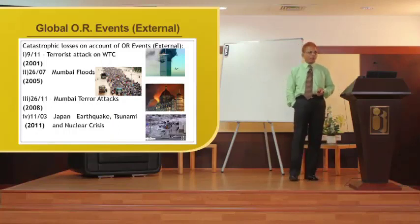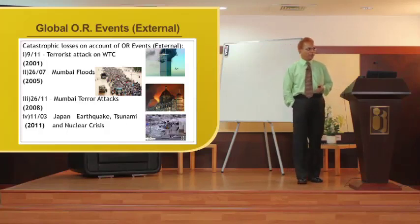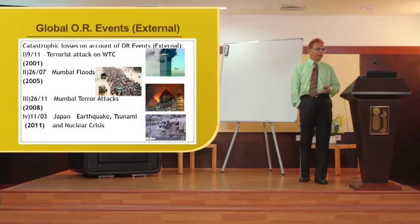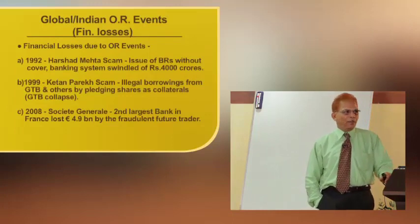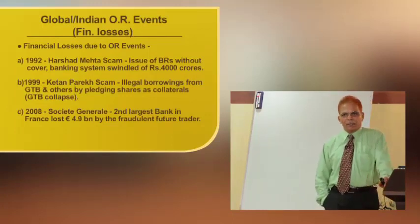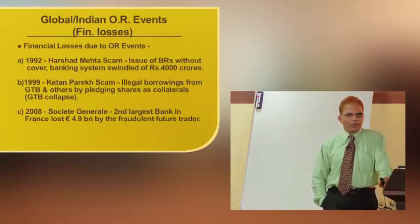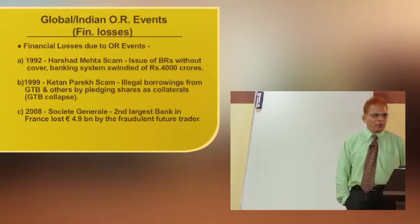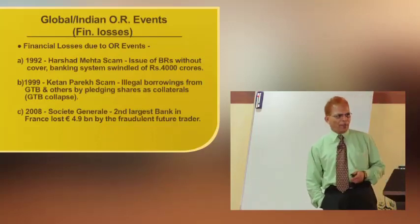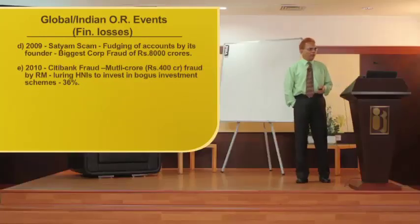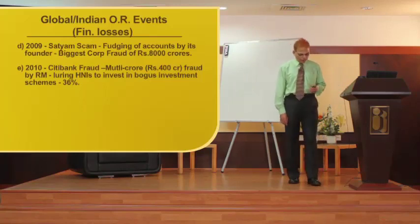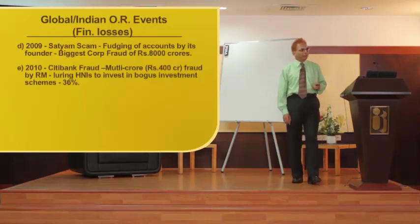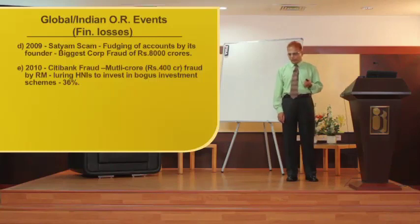Let us look at some financial loss events that have happened globally. In our own case, the Harshad Mehta scam resulted in a loss of 4,000 crores. Ketan Parikh again caused a collapse. And Société Générale — a single dealer put Société Générale to a loss of 4.9 billion. The Satyam scam itself was worth 8,000 crores. And then the Citibank fraud — multi-crored, around 400 crores. These are all examples of operational risk events which caused reputational issues for the banks involved.